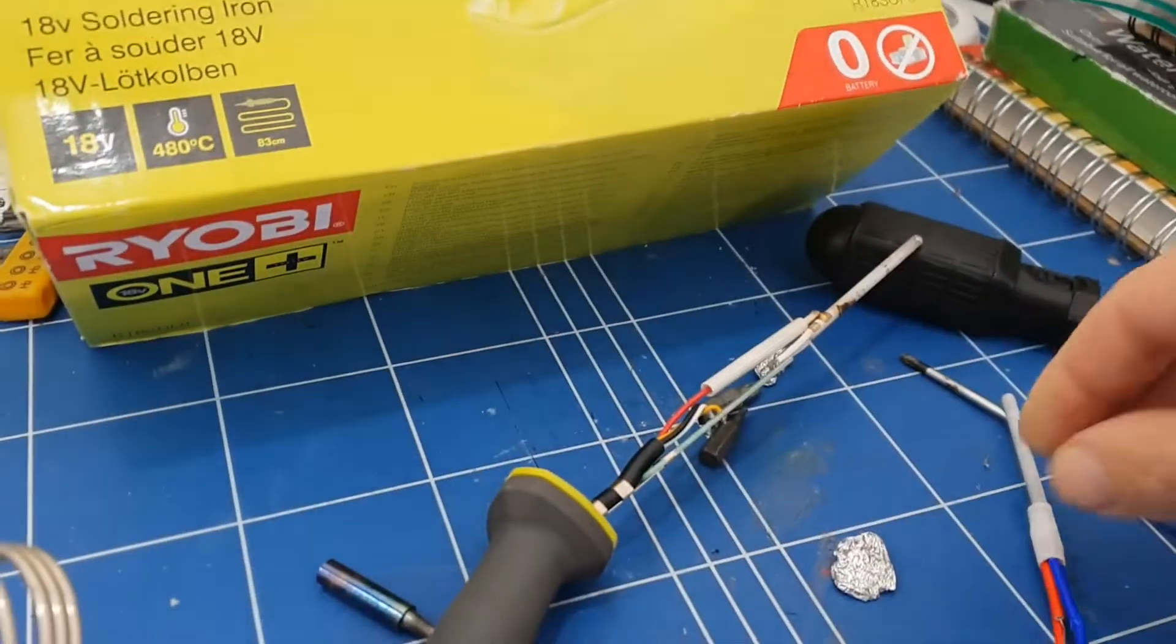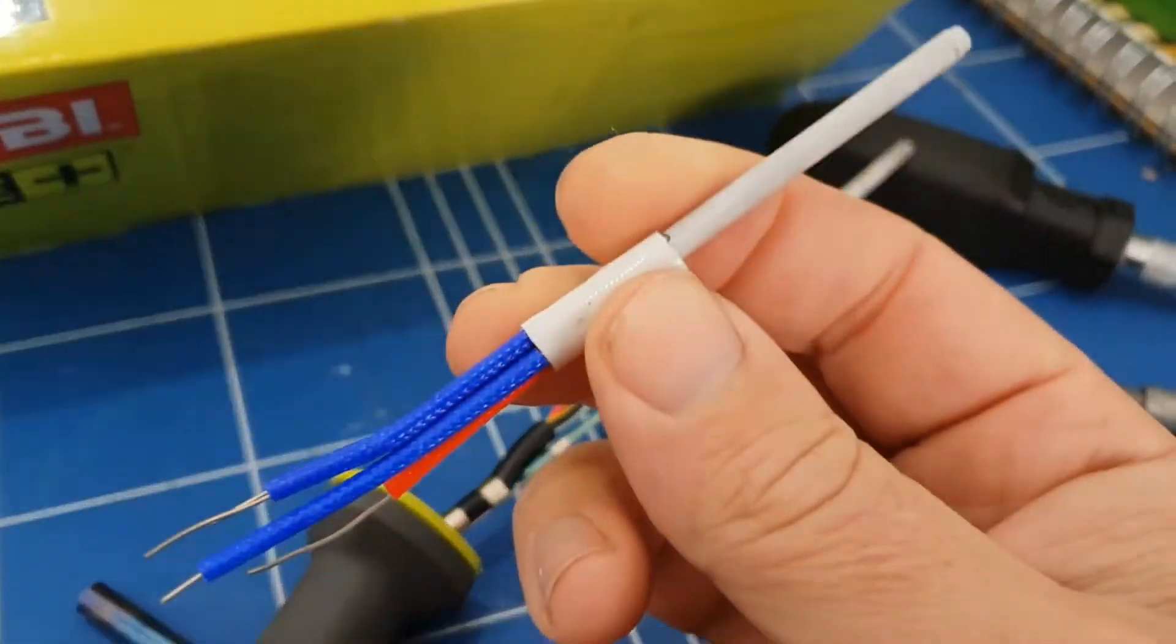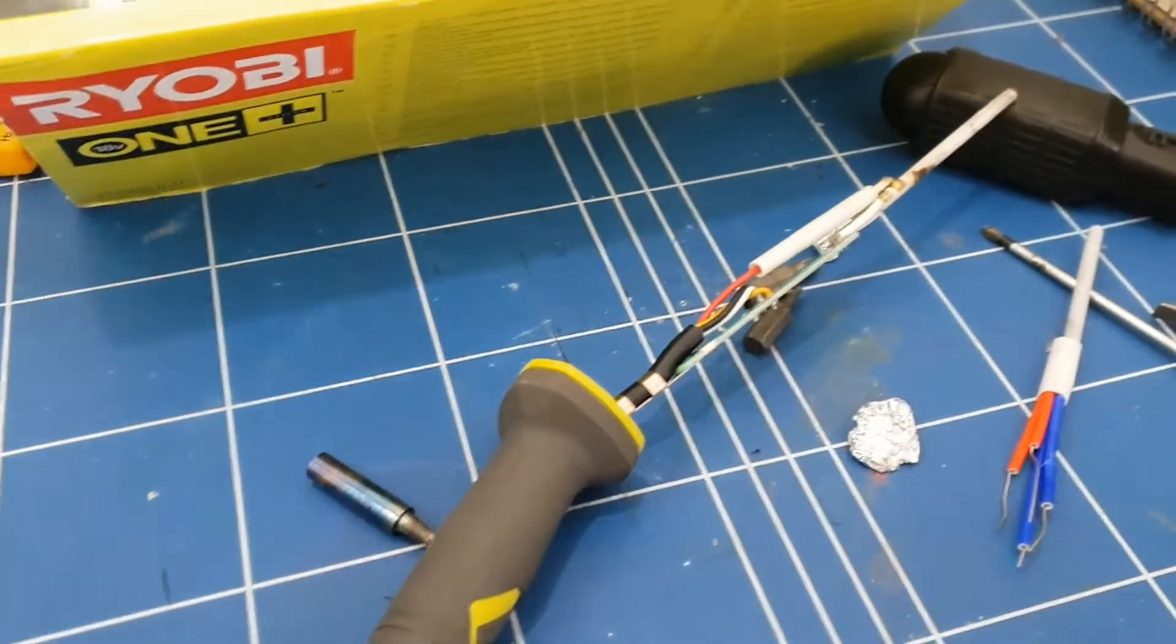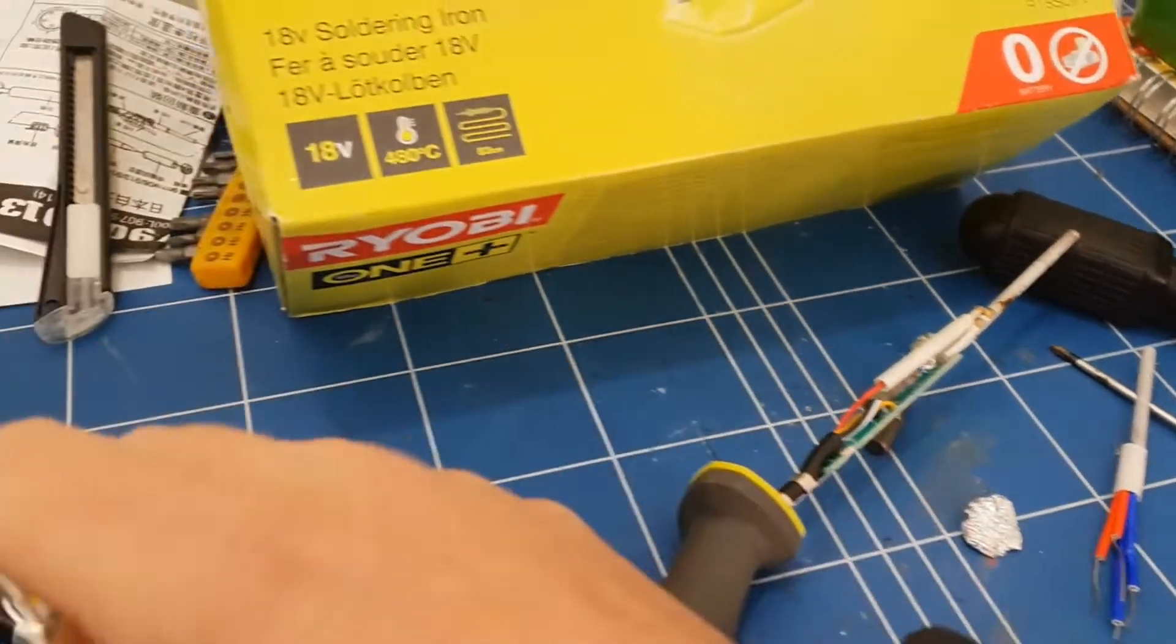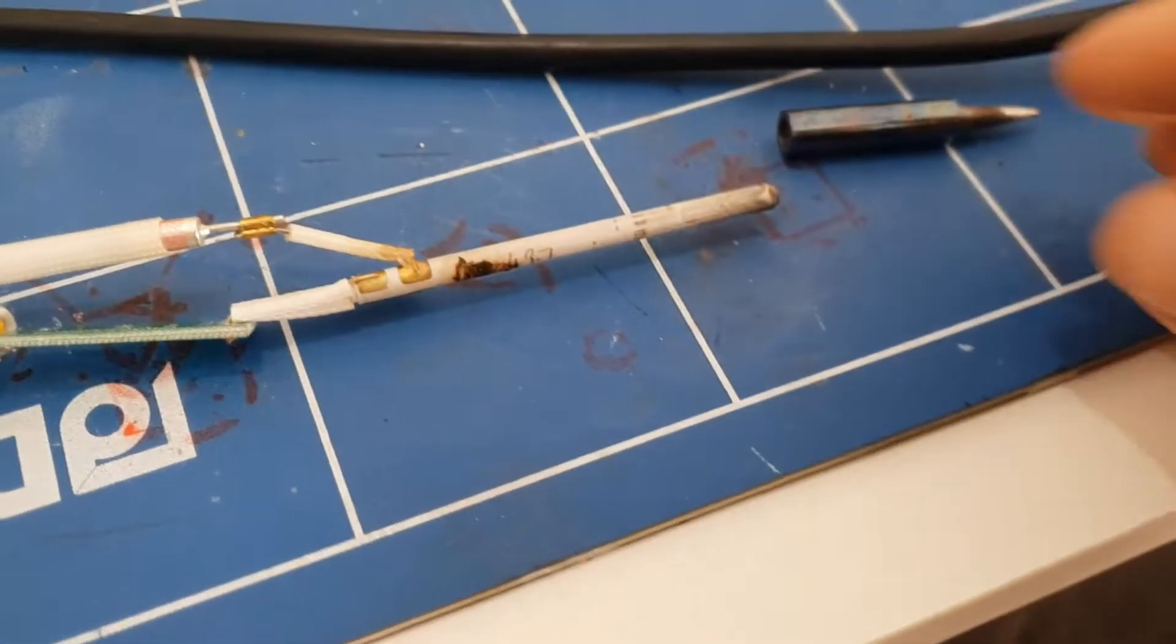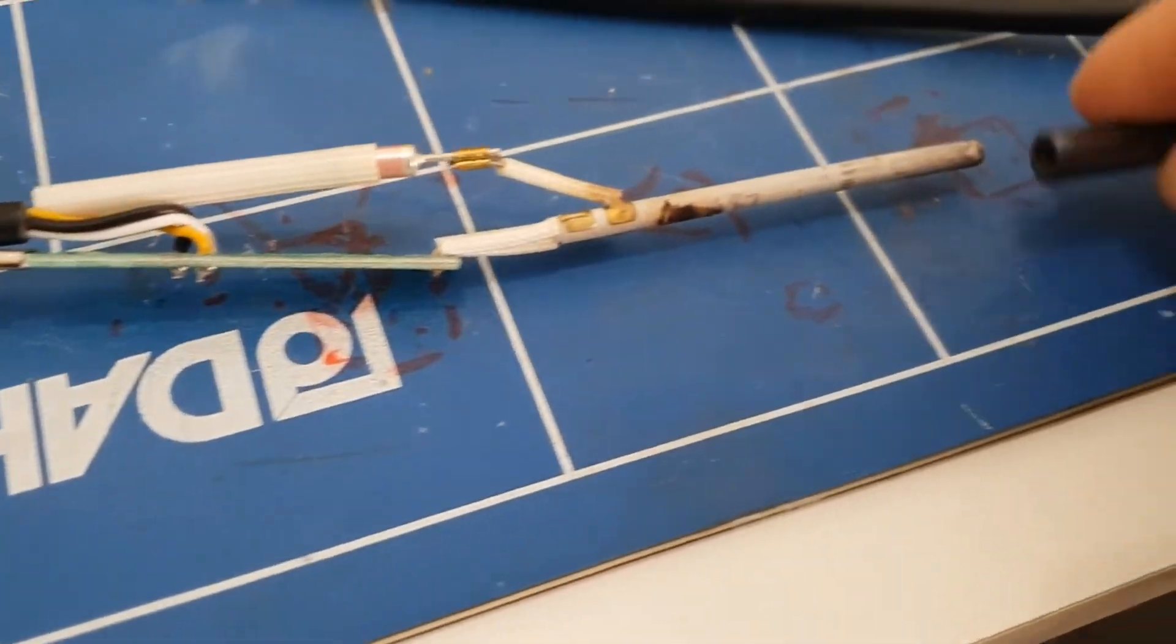So I've ordered a new one from China, and you probably guessed it's just a cheap Chinese two-pound thing which looks pretty much identical to the one in there. So I'm gonna swap it over and see whether that fixes it, which hopefully it will. Right, so the first step is to remove the old heating element.